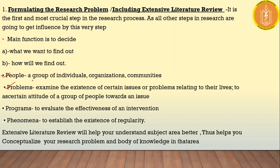Extensive literature review means that once you specify your problem — the sector or population you want to study — you identify the research gap. After that, you study past researches using websites like Shodh Ganga, ResearchGate, and Google Scholar. You study papers, topics, and articles related to your subject. This is the kind of homework we do in order to find and narrow down our research problem.